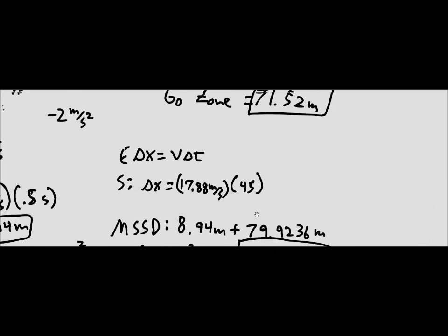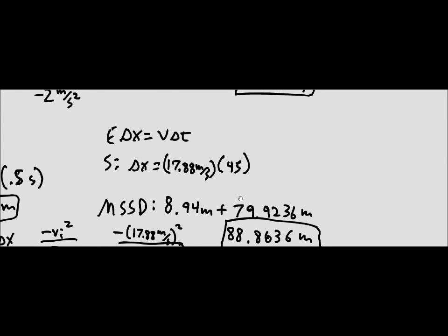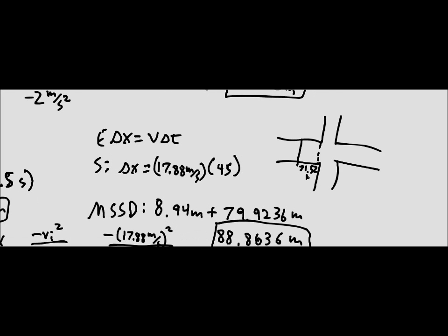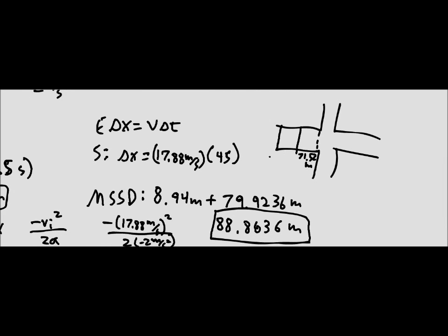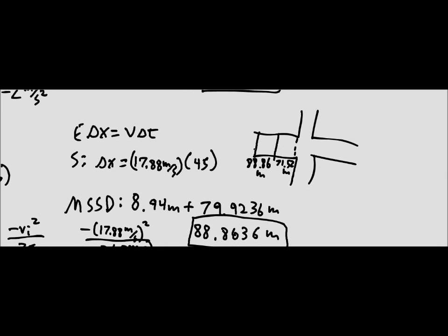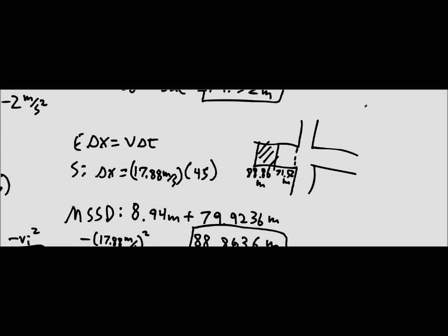Looking at our results, the go zone of seventy-one point five two meters is less than the minimum safe stopping distance of eighty-eight point eight six meters, confirming there is a dilemma zone. To find the dilemma zone, we subtract the smaller number from the larger: eighty-eight point eight six meters minus seventy-one point five two meters gives a dilemma zone of seventeen point three four meters.